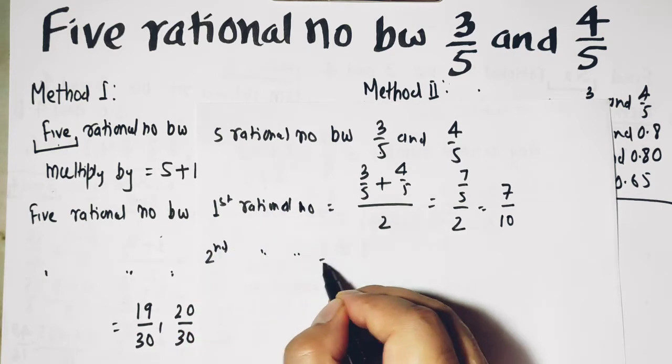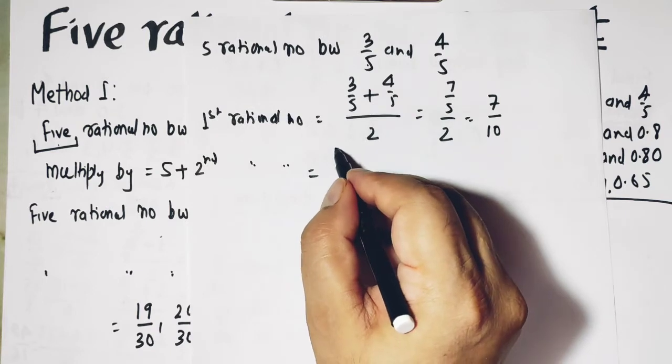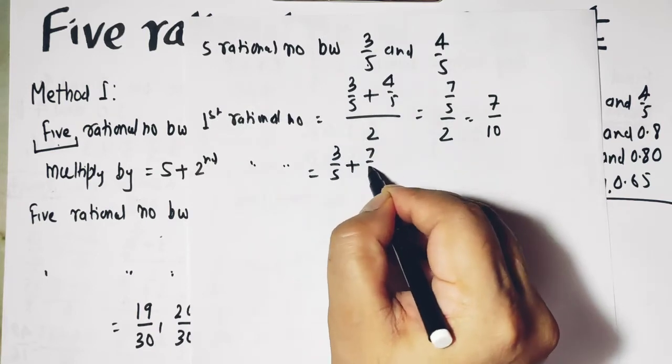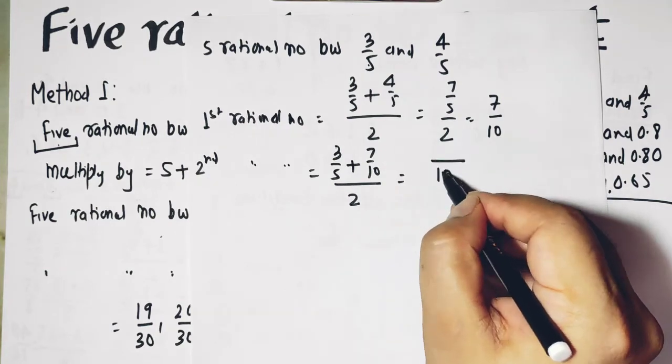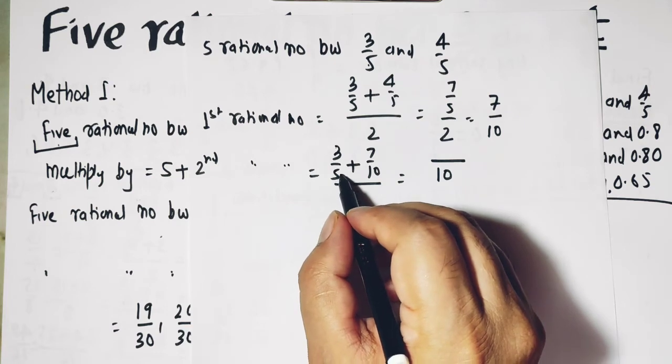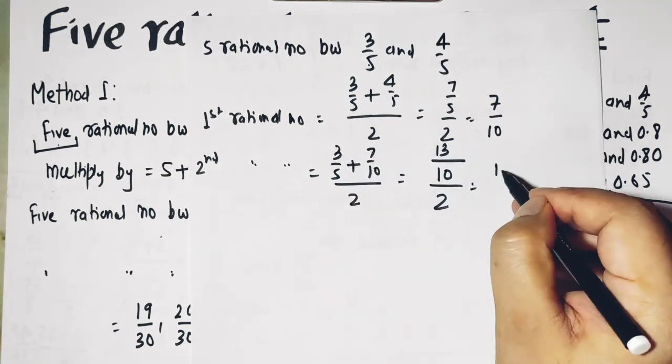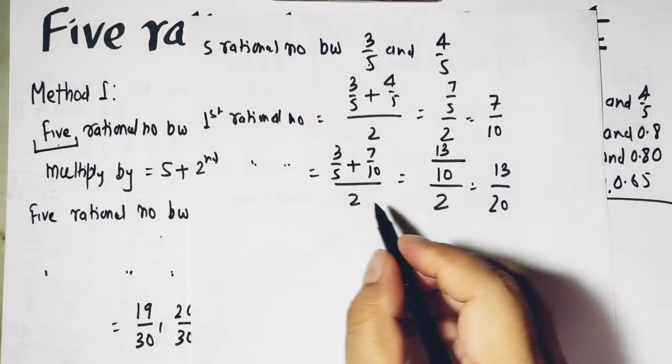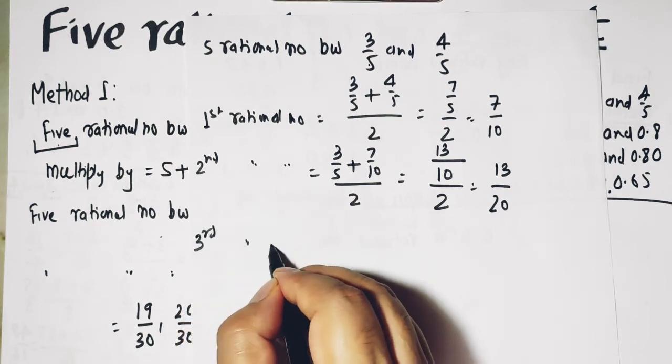Second rational number: now take this and this. 3 upon 5 plus 7 upon 10 divided by 2. LCM is 10. If you take LCM 10, it will be 6 plus 7 which is 13. And it is 13 upon 20. I hope you know how to add these numbers.